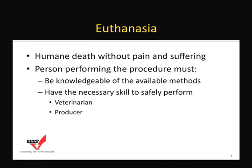Euthanasia, by definition, is a humane death without pain and suffering. The person performing the procedure should be knowledgeable of the available methods and have the necessary skill to safely perform humane euthanasia. The veterinarian has both the knowledge and the skills necessary. Sometimes, however, the animal's well-being requires immediate euthanasia when the veterinarian is not immediately available. In this case, the producer may need to perform on-farm euthanasia, and it is essential that the producer possess both the knowledge and the skill needed before proceeding.